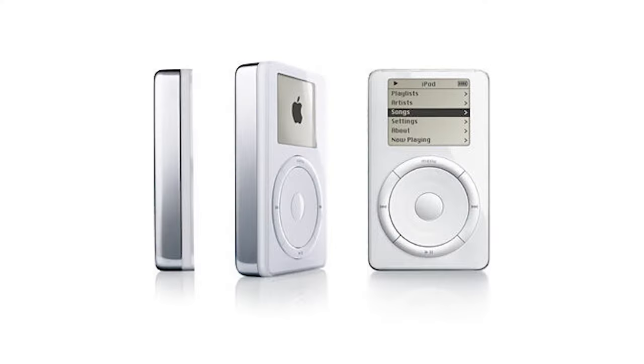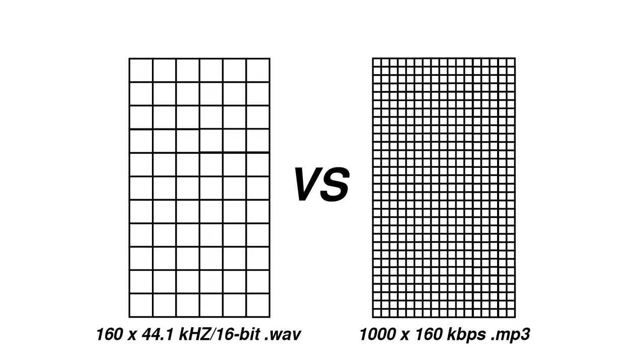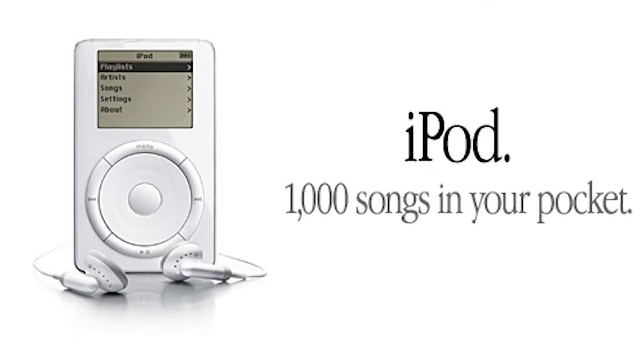When the original iPod was first released in 2001, it had only 5GB of storage capacity, which would theoretically only hold about 160 songs at CD quality. Not very impressive by today's standards. And this is where lossy audio compression was helpful. By compressing the data in a WAV file, audio files became much smaller. You could fit 1,000 compressed songs on that same 5GB of hard drive space, which was much more enticing to consumers at the time.